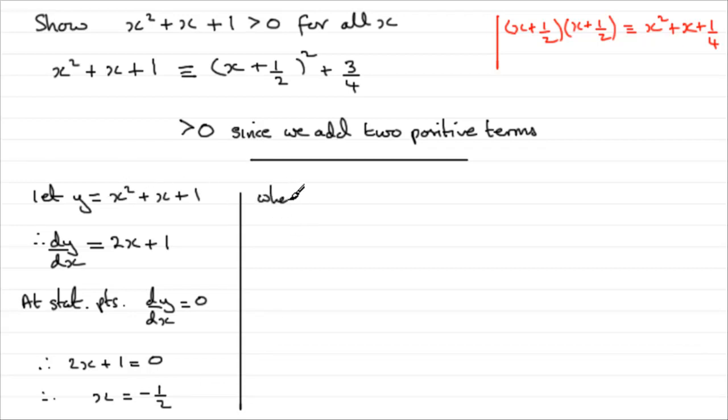So we can say that when x equals minus 1 half, what do we get for y? Well, y would equal minus 1 half squared, which is going to be 1 quarter. And then we've got at minus 1 half, which is going to be minus 1 quarter. And at 1, you're going to get 3 quarters. So the corresponding value of y is going to be 3 quarters.